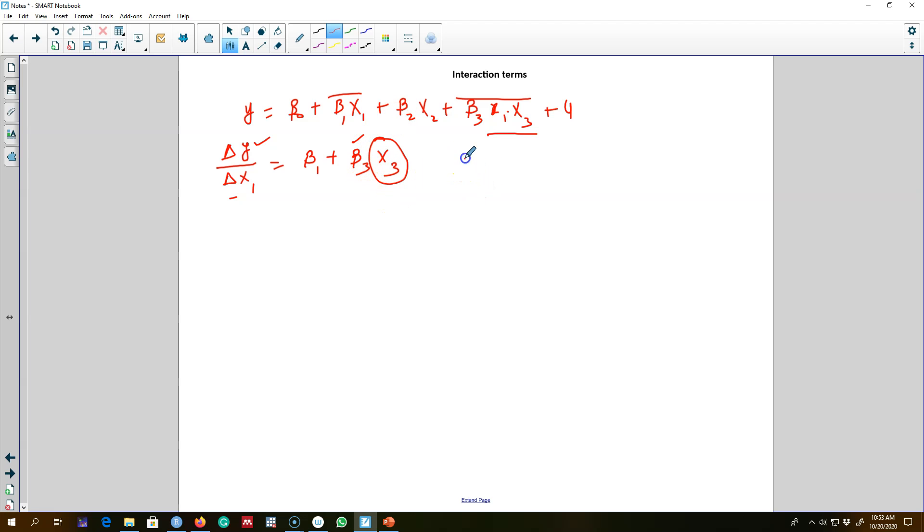If beta 3 is 0, then the change in y caused by change in x is beta 1. This is what we've been doing since the beginning of the class. In that case, beta 1 will show the ceteris paribus effect of x1 on y.